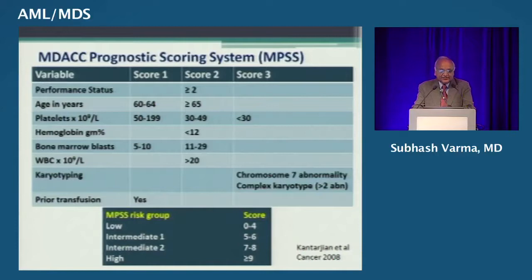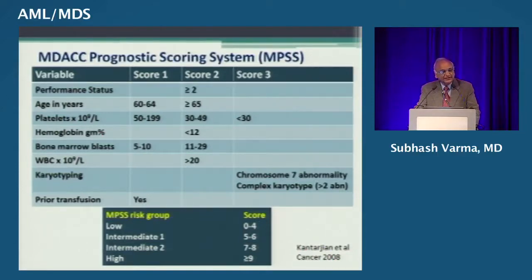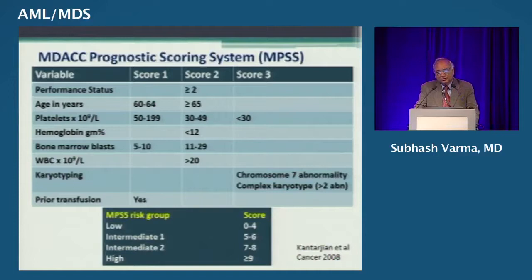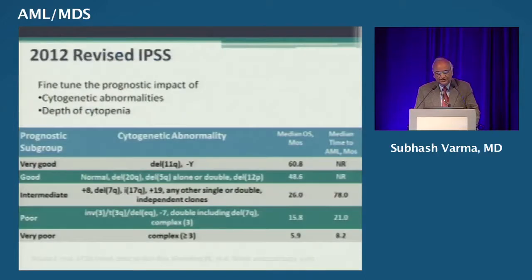Then came the MD Anderson Prognostic Scoring Index, which incorporated many clinical variables: performance status, age in years, platelets, hemoglobin values, bone marrow blasts, WBC numbers, karyotyping, and prior transfusions. Independent groups showed that this prognostic scoring system can predict ultimate outcomes in patients with myelodysplasia.